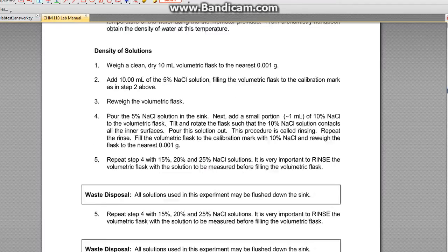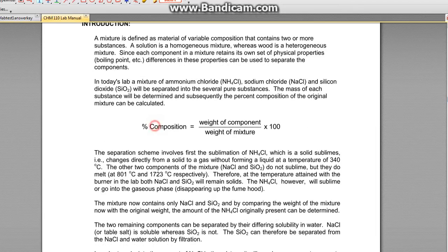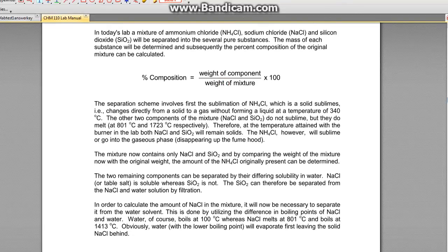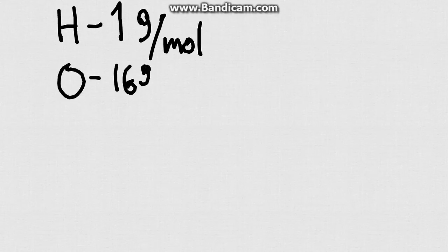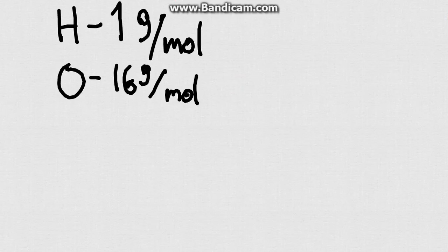If we go way back in your brain to the mixture separation, you need to know how to do this calculation right here. For example, if we want to calculate what the weight of, let's say, hydrogen and water is: we know that hydrogen weighs one gram per mole, and we know that oxygen weighs 16 grams per mole. If we go into here, we got the weight of our mixture is going to be H2O.